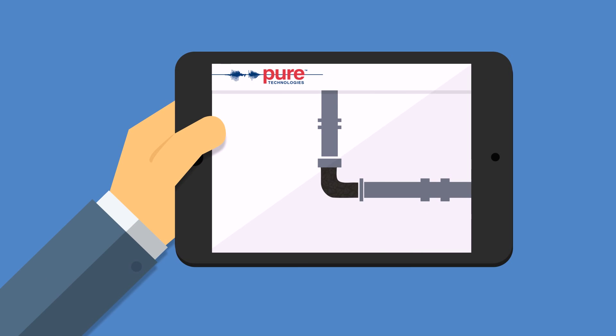Proactive pipeline management identifies problematic pipe sections to allow for proactive repair before they become catastrophic bursts.